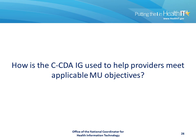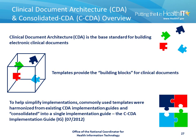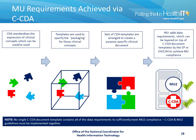So how is the consolidated CDA implementation guide used to achieve applicable meaningful use objectives? CDA is the base standard for building electronic documents. Templates provide the building blocks for clinical documents. To help simplify implementation, commonly used templates were harmonized from the existing CDA implementation guides and consolidated into a single implementation guide — the consolidated CDA implementation guide. CDA standardizes the expression of clinical concepts which can be used and reused. Templates are used to specify the packaging for those clinical concepts. Sets of CDA templates are arranged in a specific format to create a purpose-specific clinical document. Meaningful use then adds data requirements which can be layered on top of the consolidated CDA document templates to achieve meaningful use compliance. A key note is that no specific consolidated CDA document template contains all the data requirements to sufficiently meet meaningful use certification criteria. Consolidated CDA and meaningful use guidelines must be implemented together.